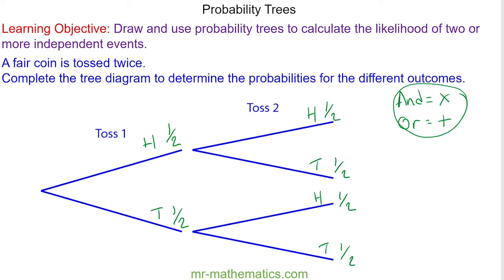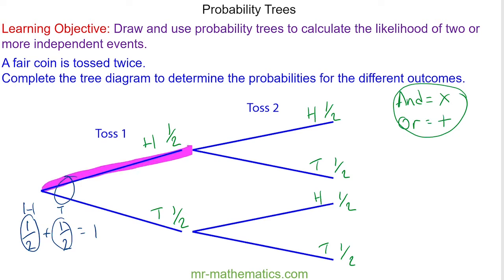We can check it, because we know this branch here — it is certain you will get a head or a tail. In probability, certain refers to the number one. So a half is a head, the other half is a tail, and together they make one. Now we can work out the probability of each event happening. The probability of a head and another head — notice the word 'and' means multiply — so a half multiplied by a half is one quarter.